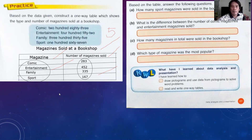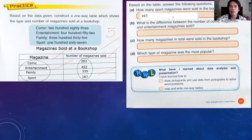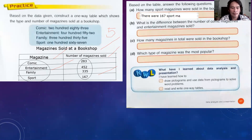Now we are ready to answer the questions for more points. Number one: How many sports magazines were sold in the bookshop? The answer is 167. Write it as a sentence: 'There were 167 sport magazines sold in the bookshop.'